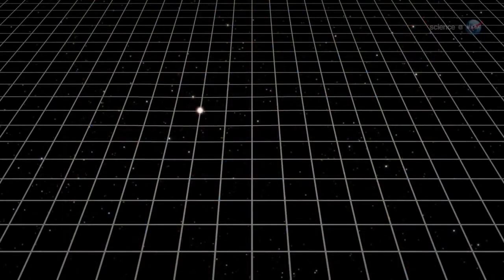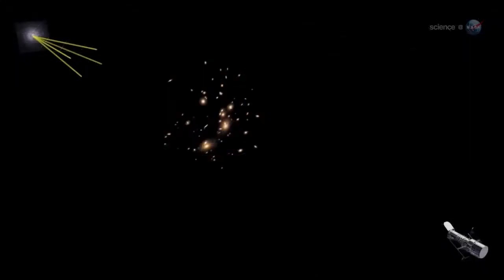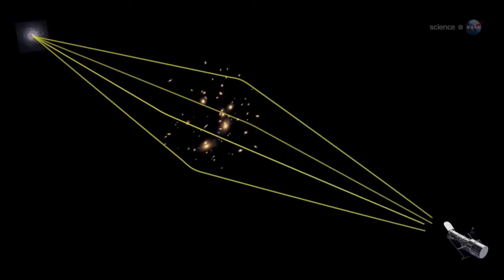As predicted by Einstein's theory of general relativity, the mass of the cluster warps the fabric of space around it. Starlight passing by is bent and images are magnified, much like an ordinary lens except on a vastly larger scale.